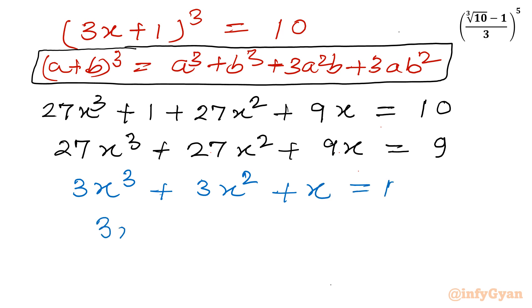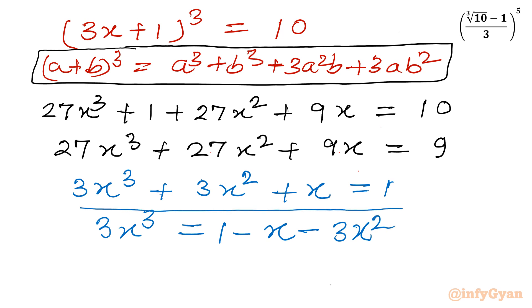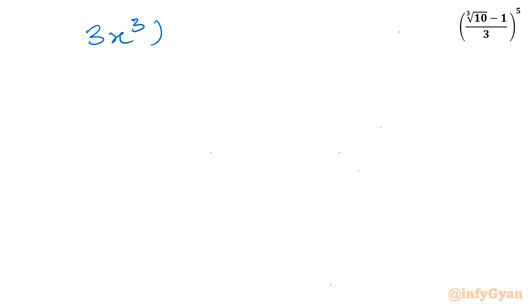After rearranging terms we can write: 3x cube equal to 1 minus x minus 3x square. This is an important result for further simplification. Now I will consider squaring both sides, so (3x cube) whole square equals (1 minus x minus 3x square) whole square.